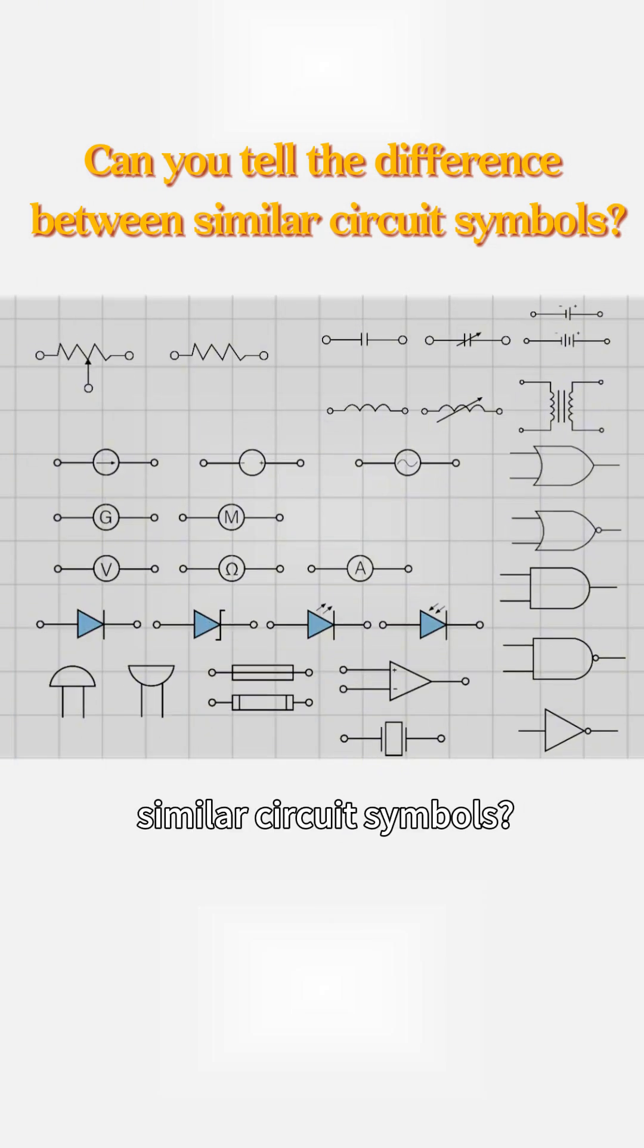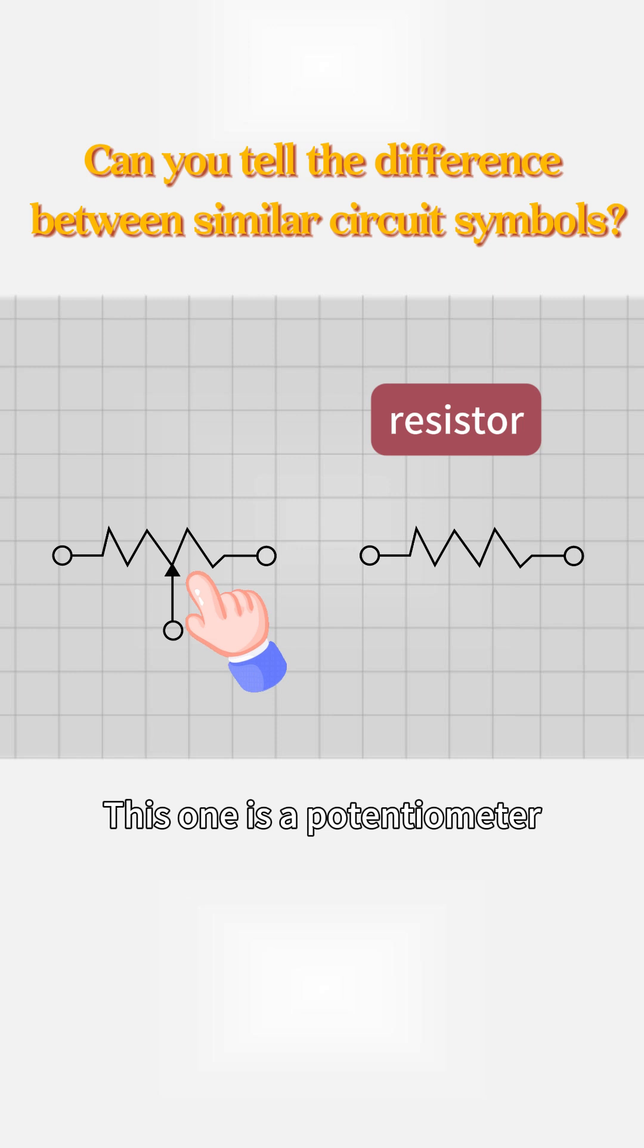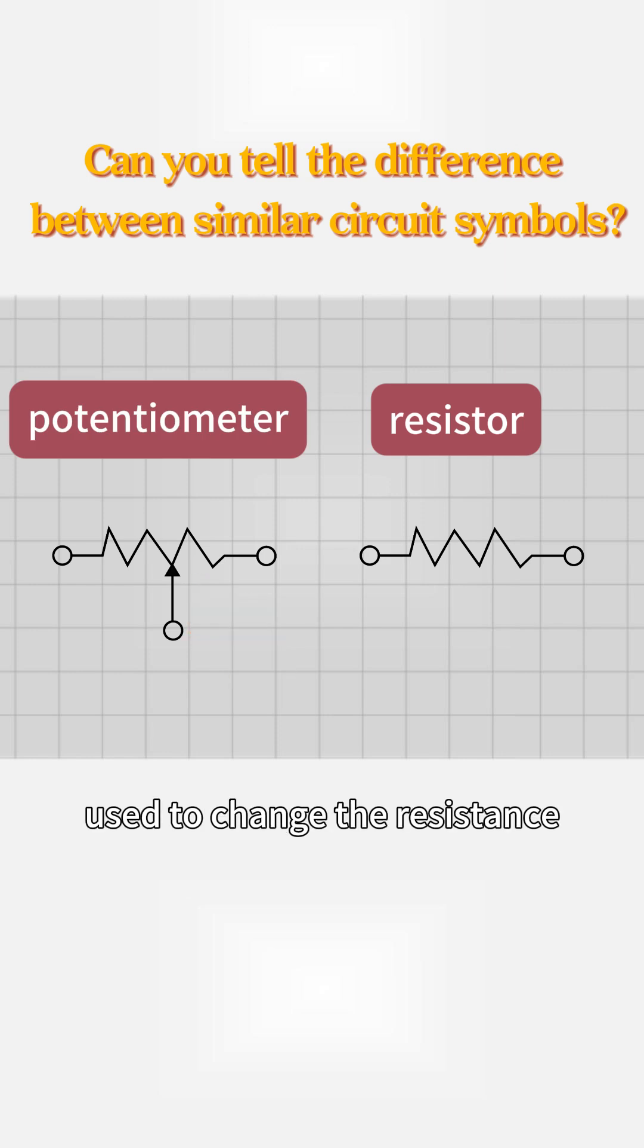Can you distinguish between similar circuit symbols? Which one is a resistor? This one is a resistor. This one is a potentiometer, used to change the resistance.